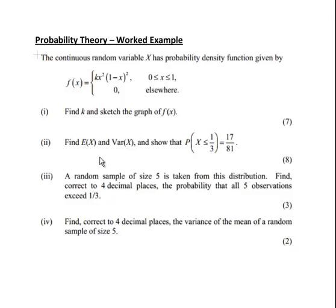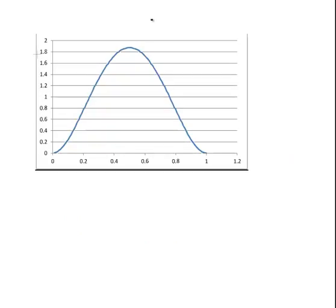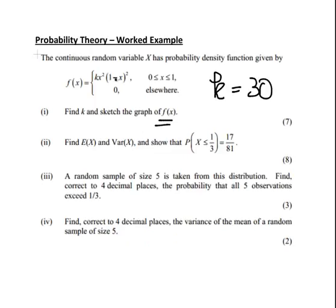This is the second part of our Introduction to Probability Theory worked example. The question we were working on is this continuous random variable X has this probability density function. In the previous part, we were asked to find out what K was and we found it was 30. We sketched the graph, I have a copy of it here. There we go, that's the sketch of it. And we calculated the expected value of X and the variance of X.